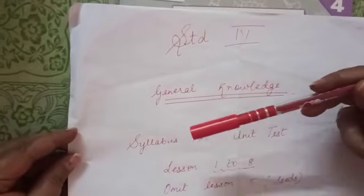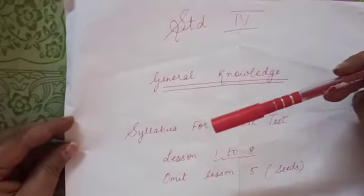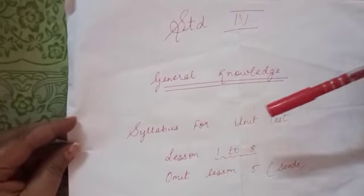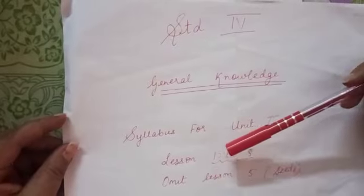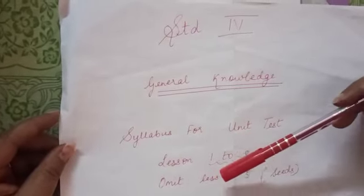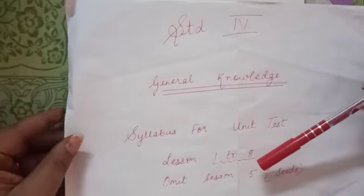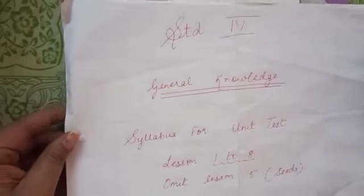You first mark the syllabus — syllabus for unit test: lesson 1, 2, 8. Omit lesson 5, that is seeds.